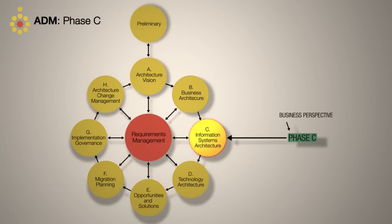Phase C takes the business perspective from Phase B as a starting point for describing the information systems architectures for an architecture project.